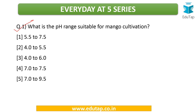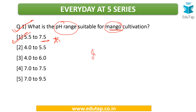The very first question: what is the pH range suitable for mango cultivation? We need to understand that temperature, rainfall, and pH all need to be suitable for each crop. For mango, the answer is a pH range of 5.5 to 7.5. Kindly memorize this. Now, as an interactive question for you: which states in India have mango cultivation? Please mention your answer in the comment section.